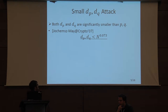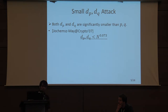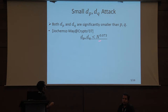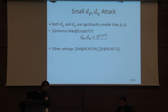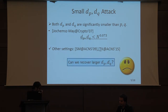For the second attack scenario — the small dp, dq attack — the natural RSA setting has P and Q the same size, and both dp and dq are small. Johannes May proposed an attack that works when dp, dq are smaller than N^0.073. As in the first scenario, no improvements have been made in these 10 years, though the construction is used in other settings. The question is: can we recover larger dp and dq?